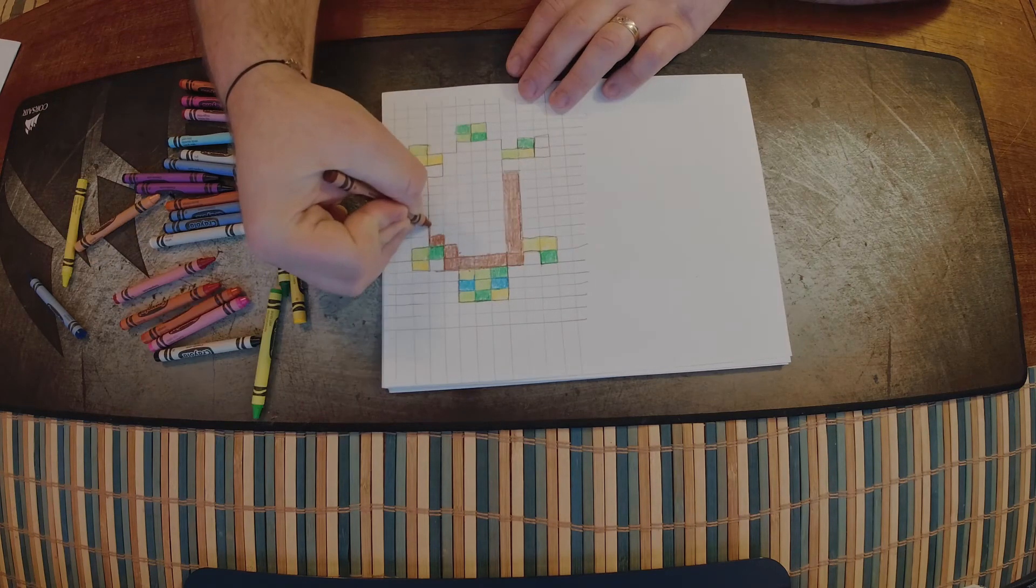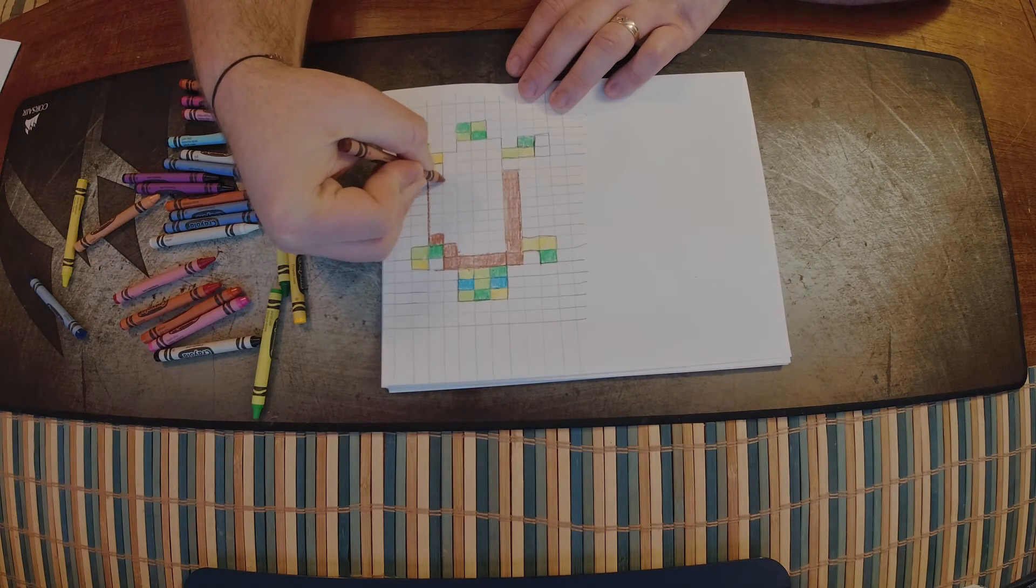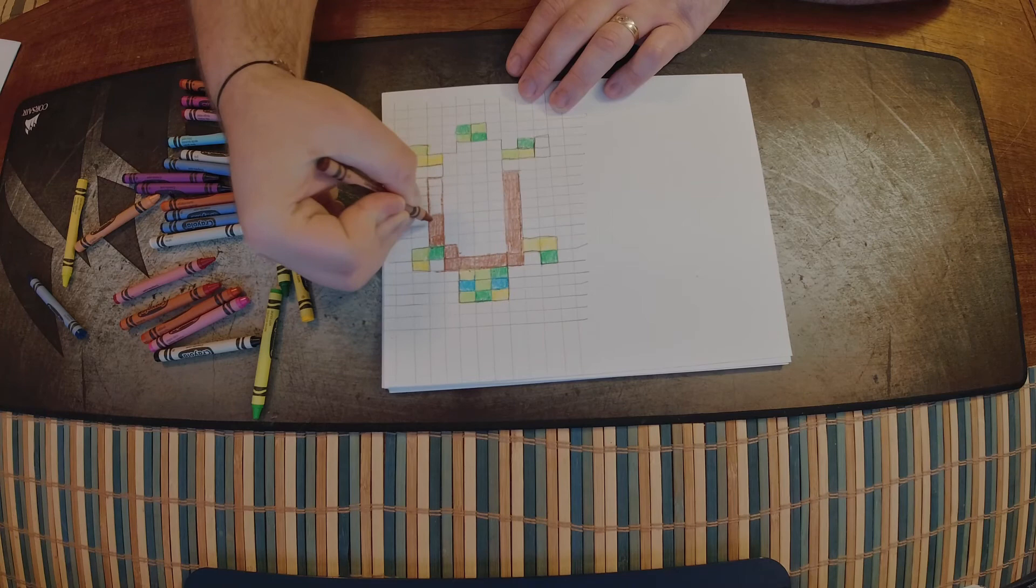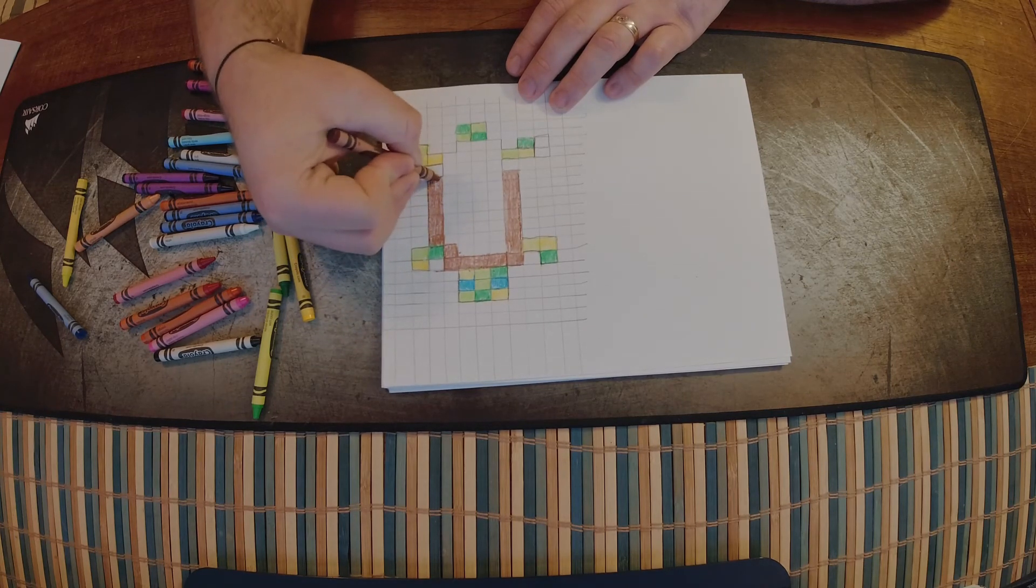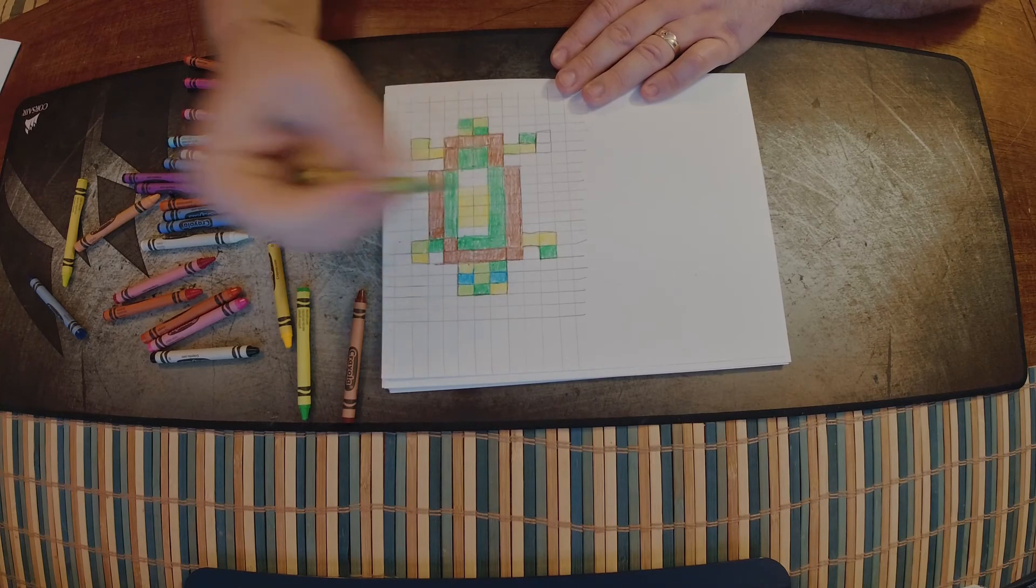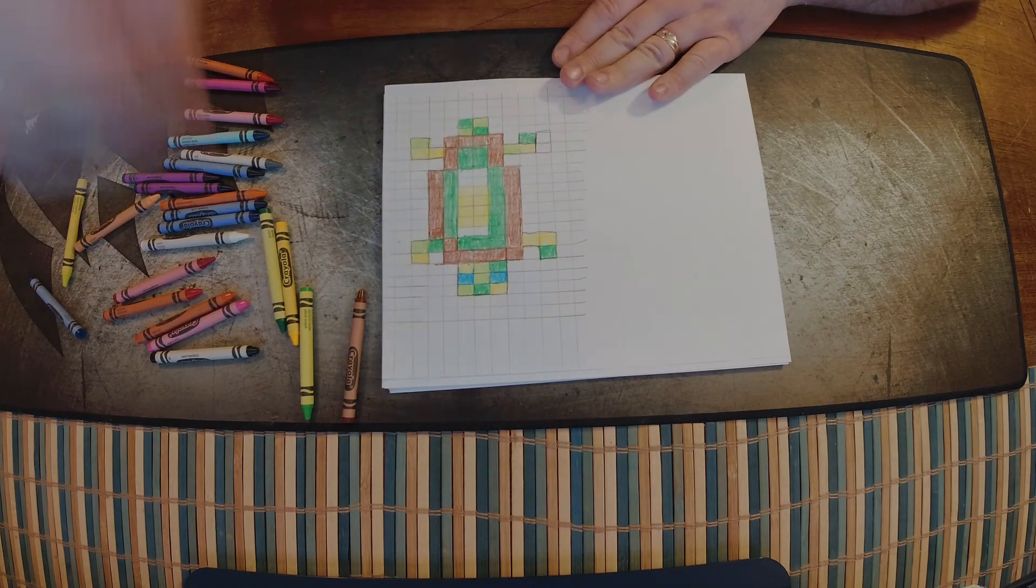And then when I get to the shell, I'm going to use some browns right along the edge to really firmly delineate that shape. And then I'm going to kind of work my way up to a yellow. So I'll have brown and dark green, light green, then yellow.